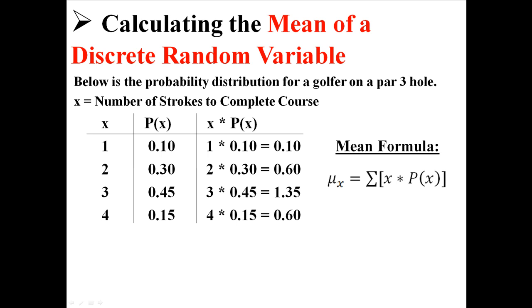So we get 0.10, 0.60, 1.35, and 0.60. And then if we add those four things together, if we take the sum of those things, we get the mean of this discrete random variable, which in this case is 2.65.